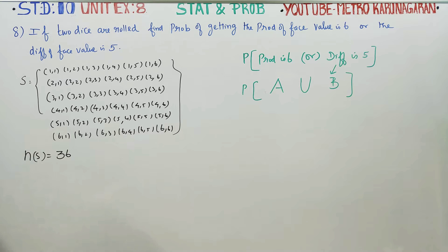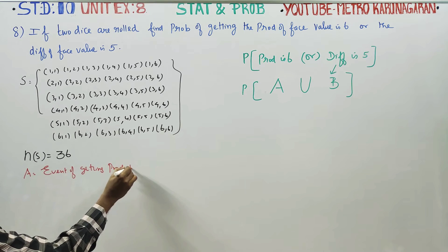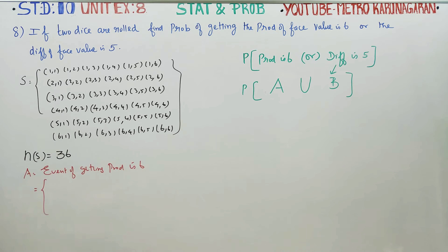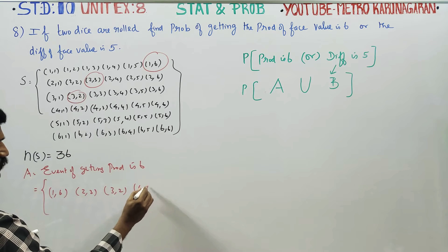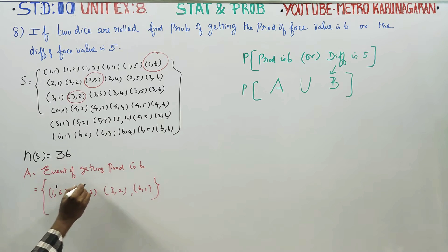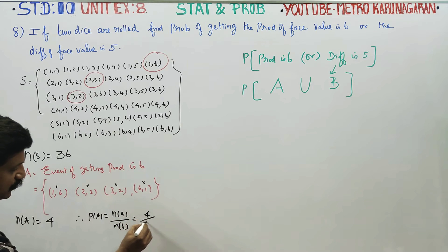If two dice are rolled, first question: product is 6. A is equal to event of getting product is 6. One times six, two times three, three times two, and six times one. The outcomes are (1,6), (2,3), (3,2), (6,1). N of A is equal to 4. Therefore P of A is equal to N of A by N of S. Your answer is 4 by 36, which simplifies to 1 by 9.